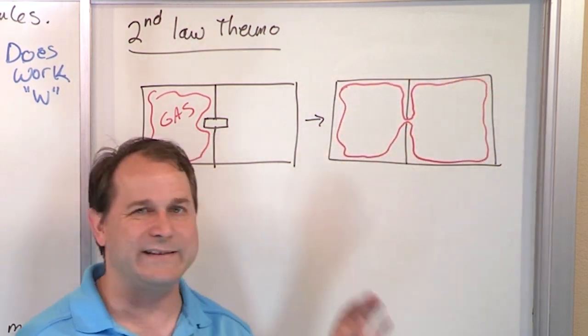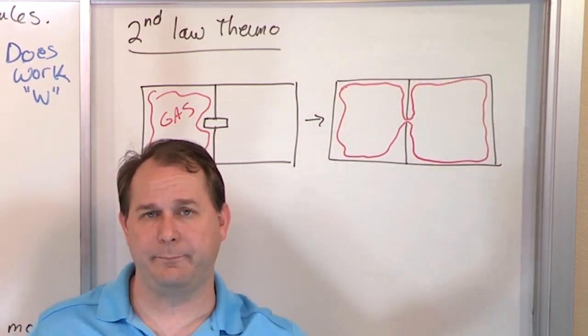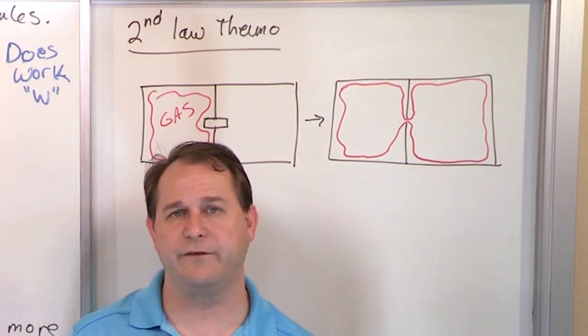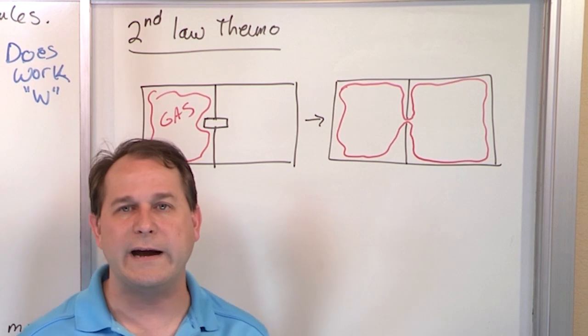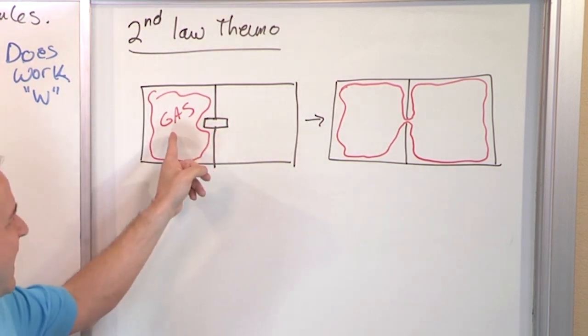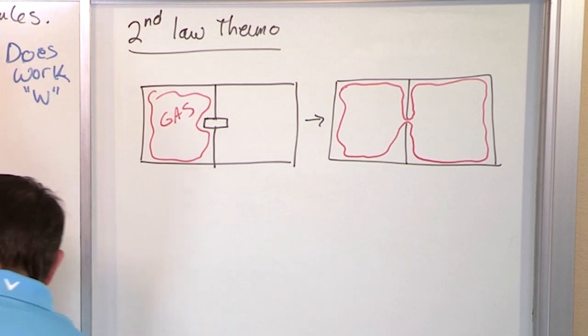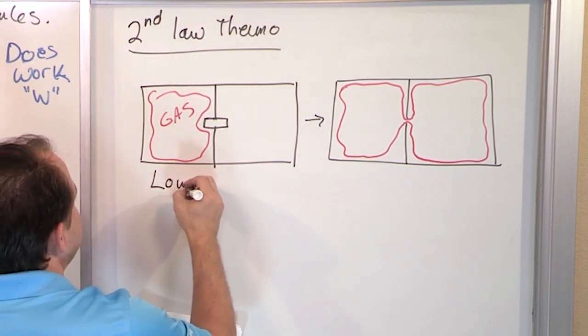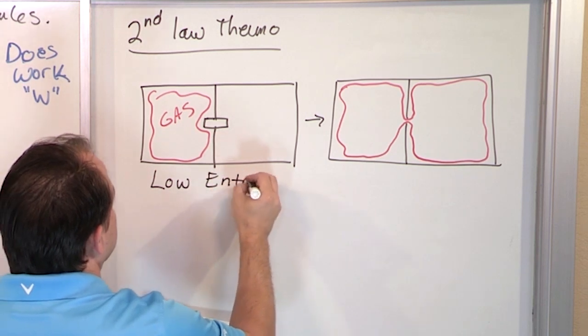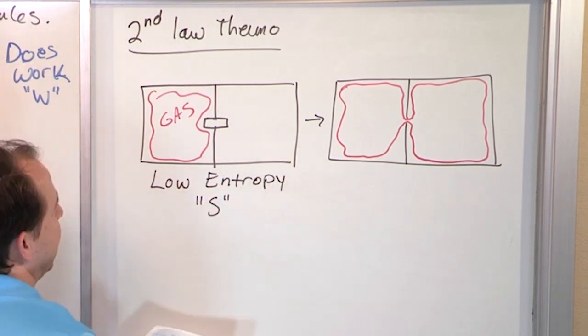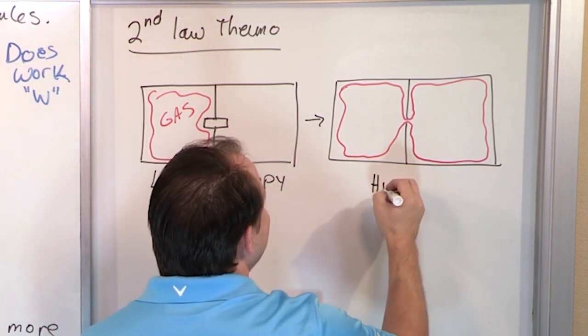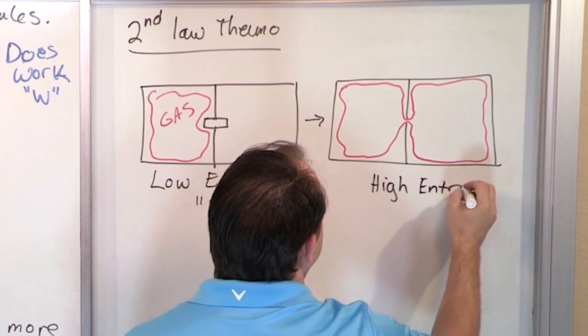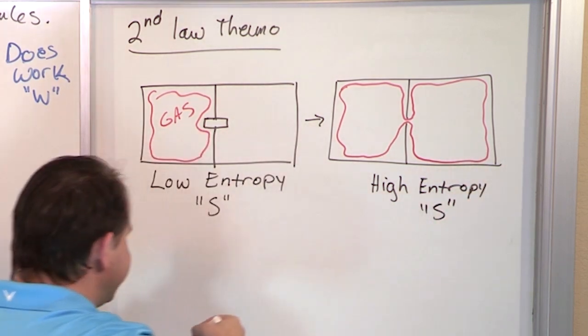And the reason it does that, or I shouldn't say the reason, but an observation is that this system has greater disorder. In other words, there are more places for the gas to be because it's a bigger space. So gas can be here, gas can be there, gas can be here, and they can all be moving at different speeds. This side has greater disorder. This side has less disorder. So what we say in physics is we say this has low entropy, and we use the letter S to talk about entropy. And this has high entropy or higher entropy, S.